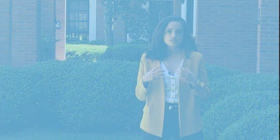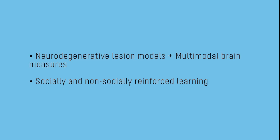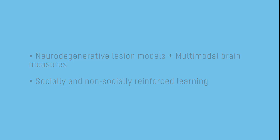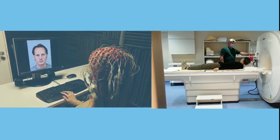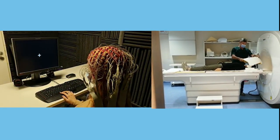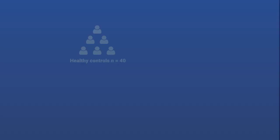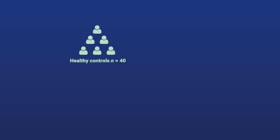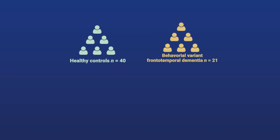However, most studies in the field have been performed in healthy participants and are correlational in nature. In this work, we use different neurodegenerative models coupled with multimodal brain measures to study socially and non-socially reinforced learning. A validated task, electrophysiological signatures, and neuroimaging recordings were used to assess this phenomenon in healthy participants and people with neurodegenerative disease.